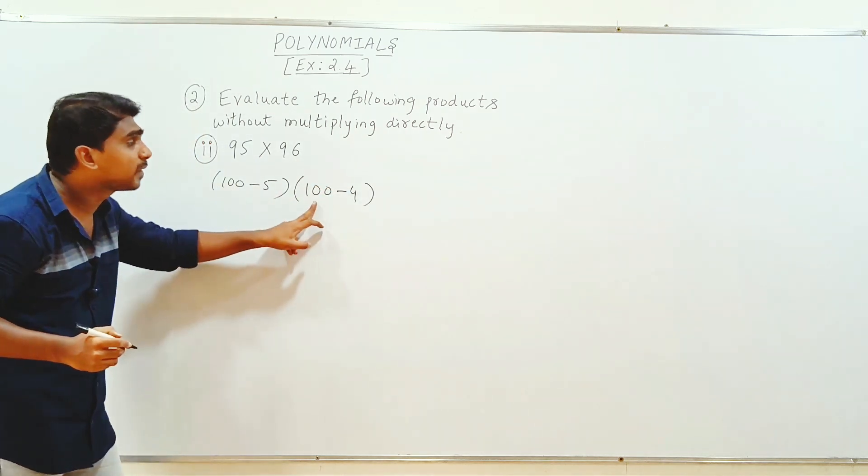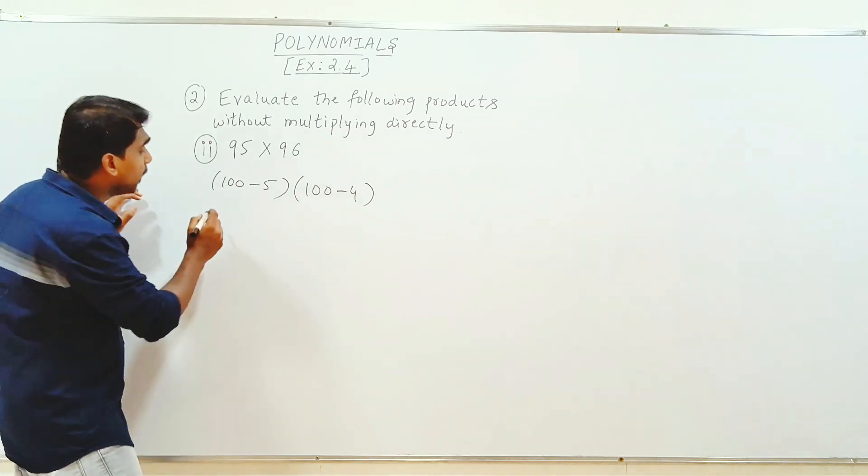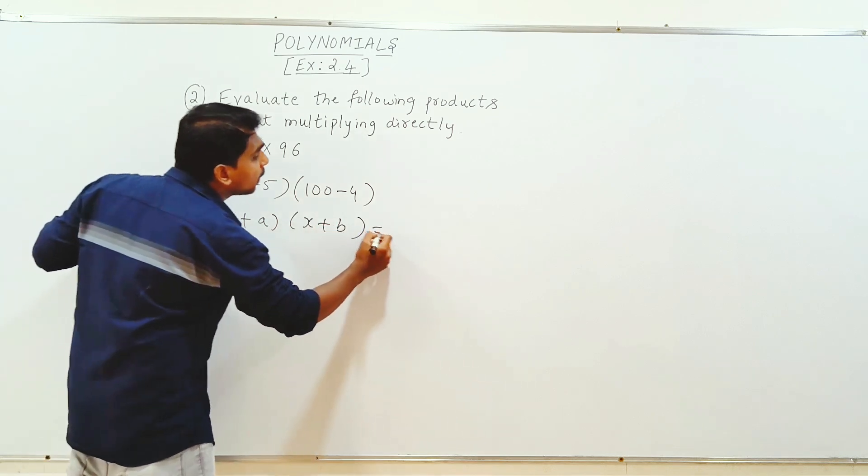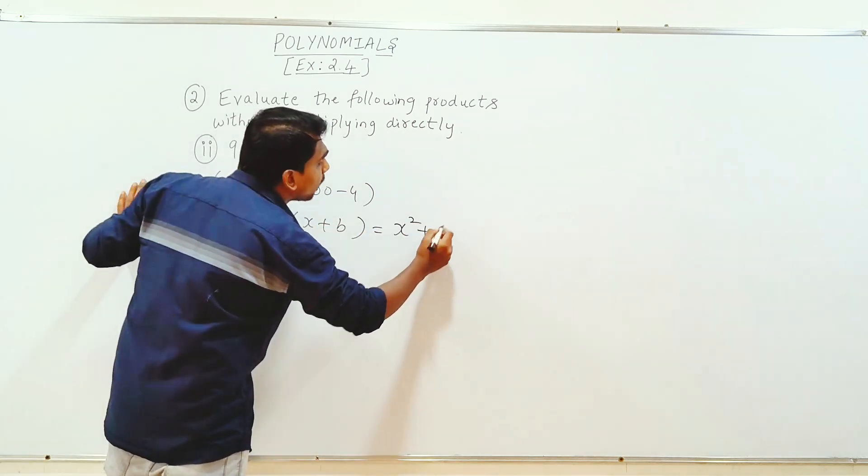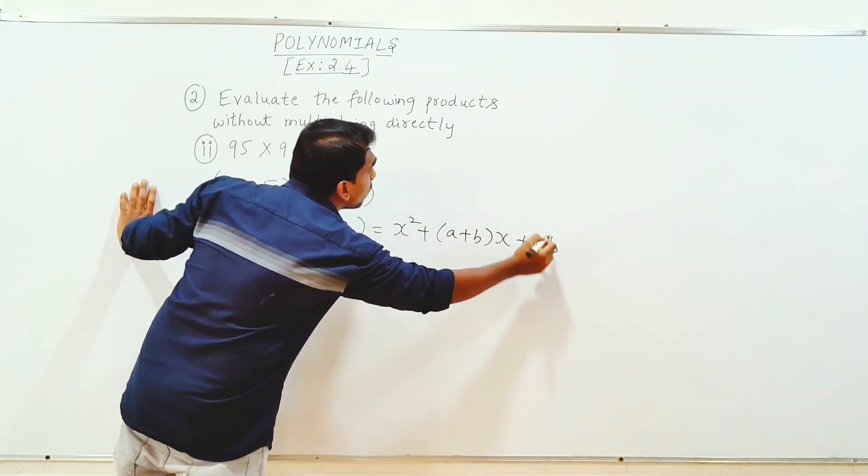So in the first number same thing, second number different thing. What formula? x plus a into x plus b is equal to x square plus a plus b into x plus ab formula.